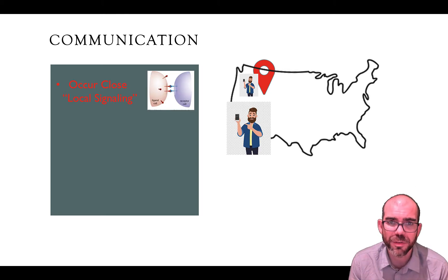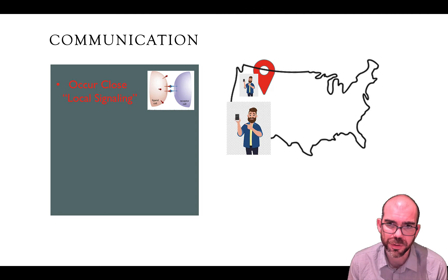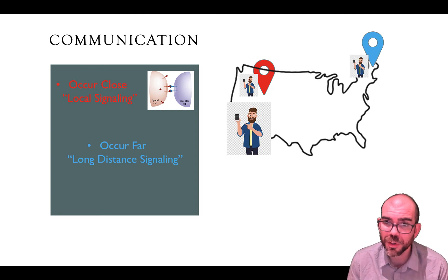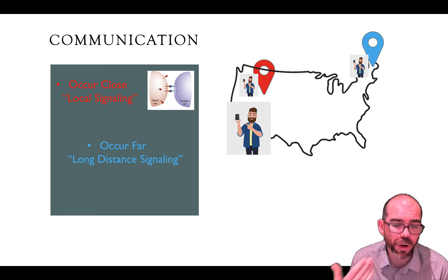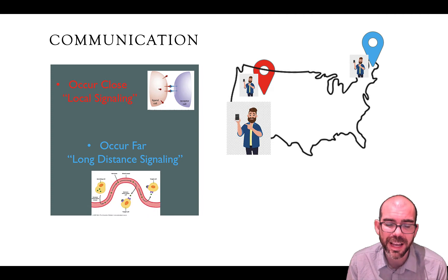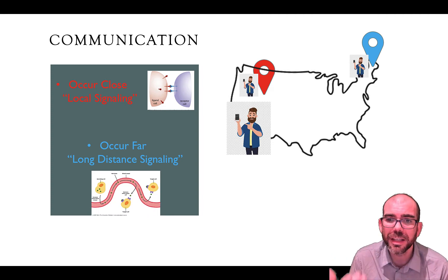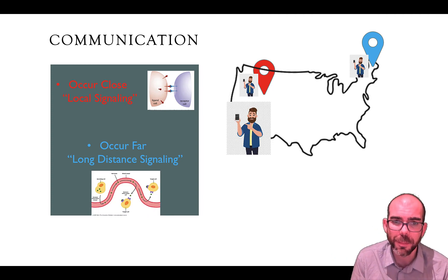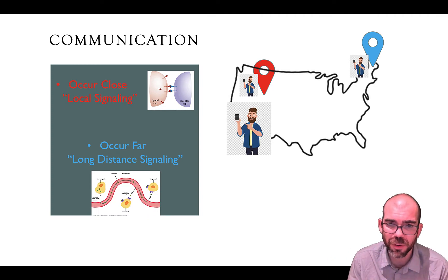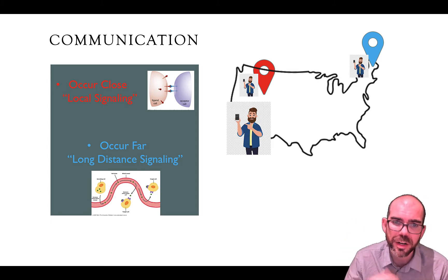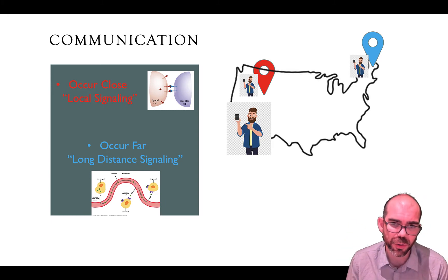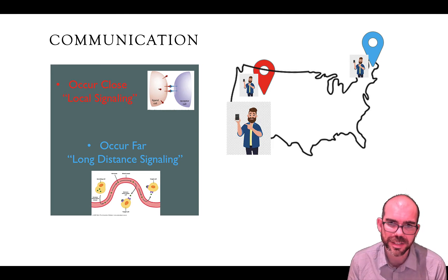Often local signaling involves cells touching each other or sending molecules. But you might also want to send messages long distance. For cells, we refer to this as long-distance signaling, and this typically involves not only molecules, but some kind of vessel or highway system — such as a circulatory system — to transmit that information long distances.